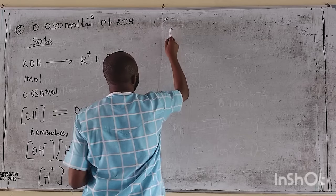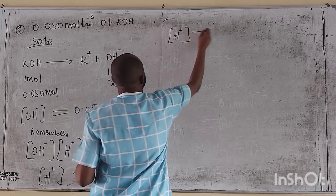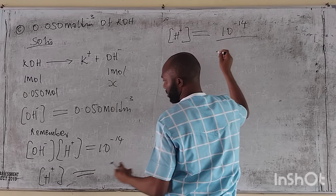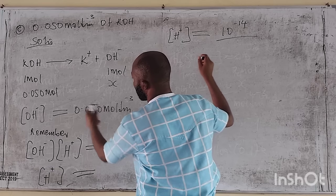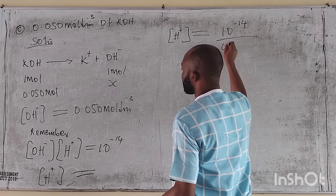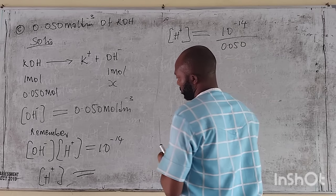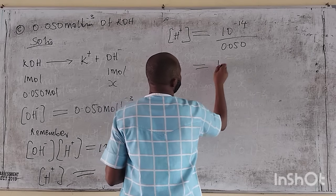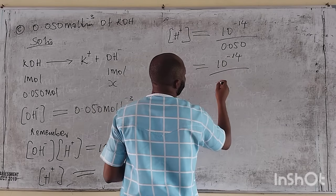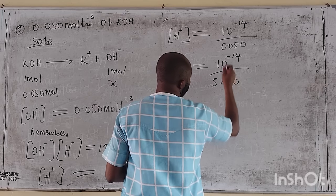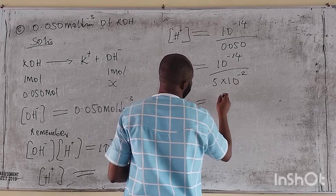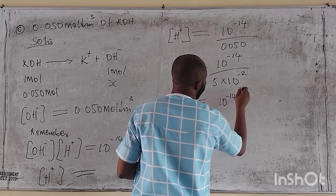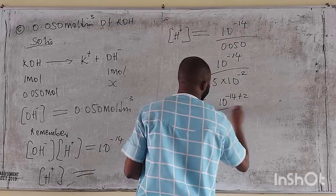The hydrogen ion concentration will therefore become 10 raised to minus 14 over 0.050, which is the hydroxide ion concentration. This is the same as 10 raised to minus 14 over 5 times 10 raised to minus 2. Making use of index laws, we have 10 raised to minus 14 plus 2 over 5.